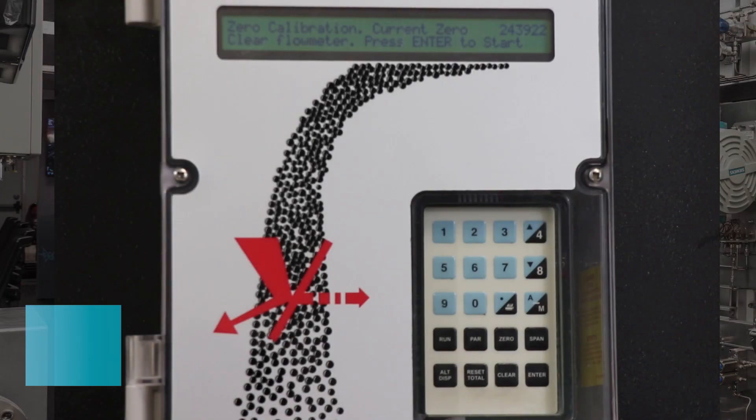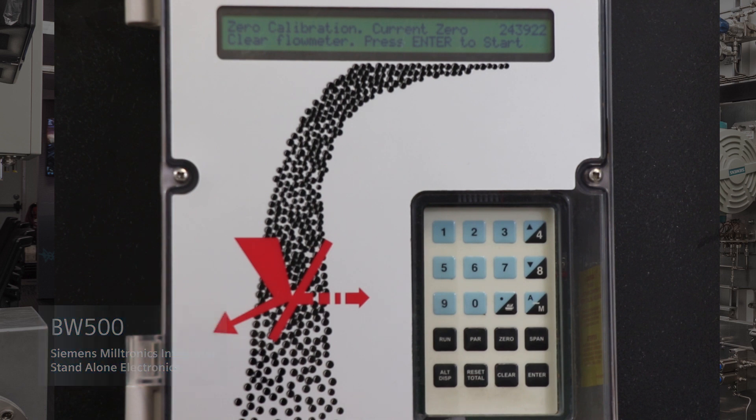The first thing you'll want to do is make sure the unit zeros. If the unit is new and you're calibrating it for the first time, it will force you to do an initial zero. Then you will hit the enter button. It will start the zero calibration and you can see from the screen that it is counting up. When the calibration is finished, it will return to zero and you will hit the enter button to accept that value.